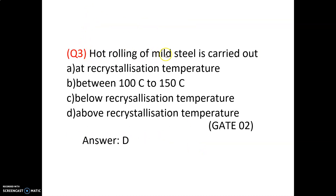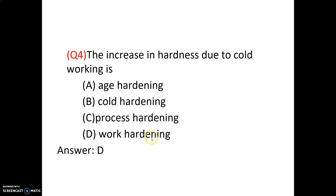Question number 3. In hot rolling, mild steel is carried out at the recrystallization temperature between 100 to 150 degrees Celsius, below recrystallization temperature, or above recrystallization temperature. For mild steel, it is carried out above the recrystallization temperature. For metals like lead and other low melting point metals, it can be performed below recrystallization temperature. For steel, it is performed above — so option D is correct.